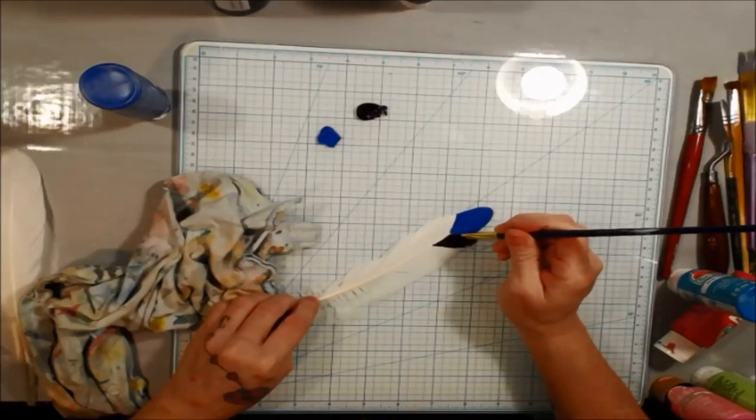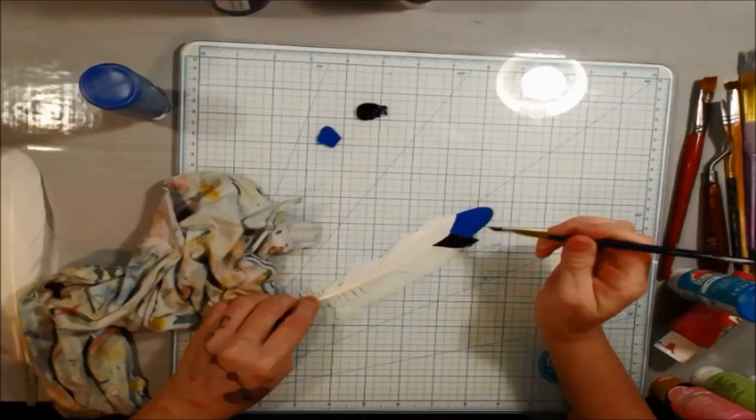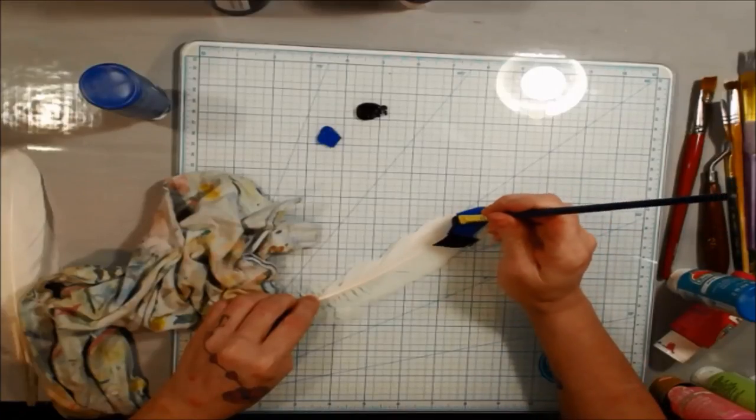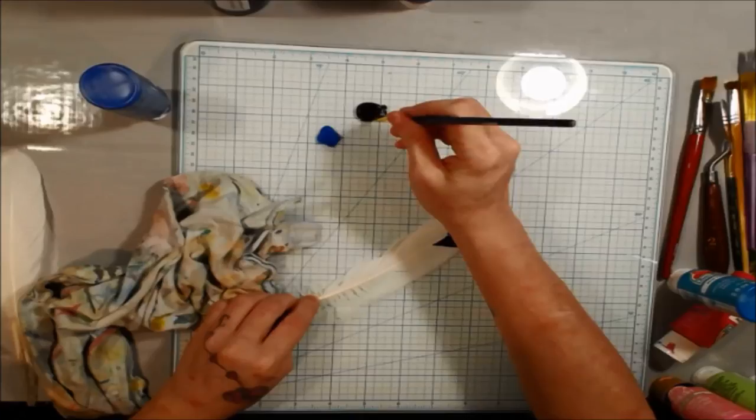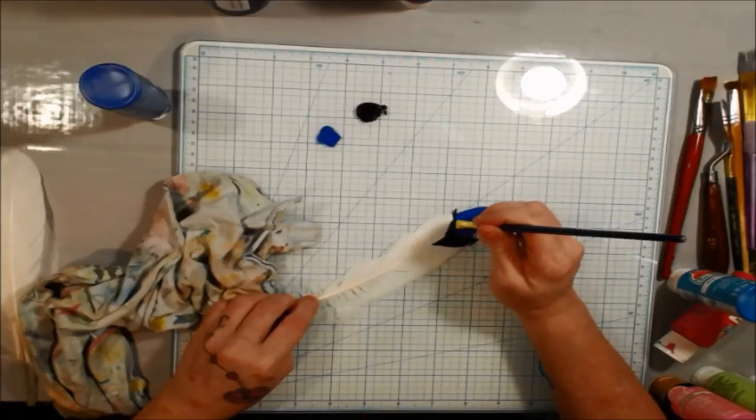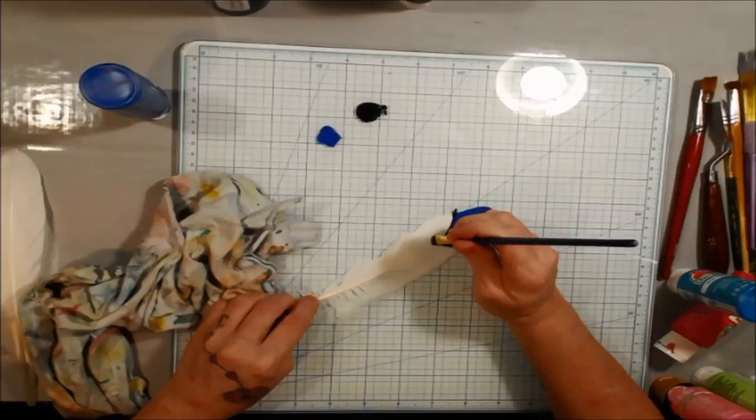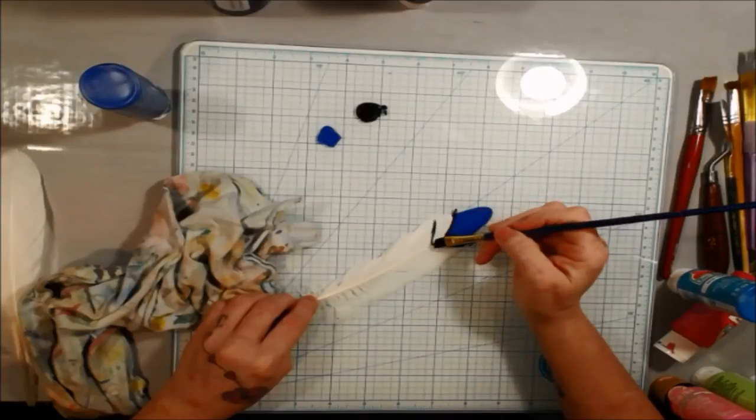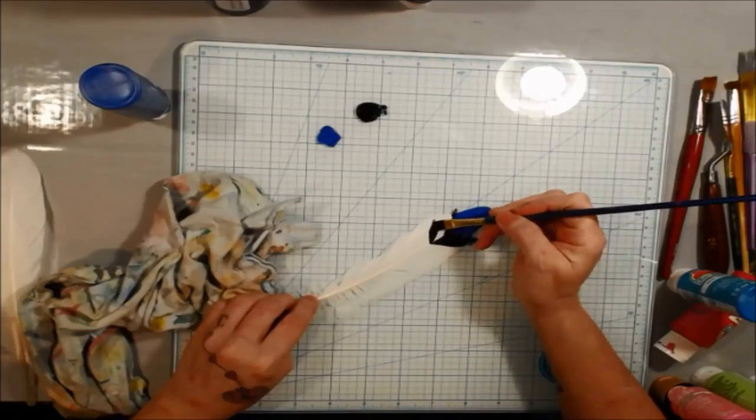The jelly plate was more of a loosey goosey style of painting, whereas this is a little bit more where you're actually painting a sort of design on the feather, which is also a lot of fun.